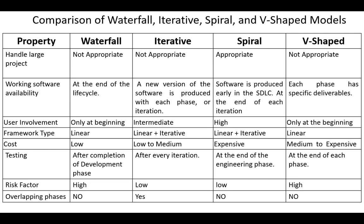Risk factor is high in both waterfall and V-shaped models, and low in iterative and spiral models. In waterfall, spiral, and V-shaped models there are no overlapping phases, but phases may overlap in an iterative model.